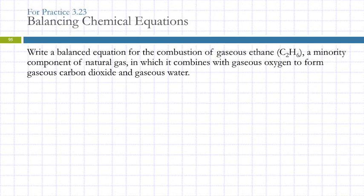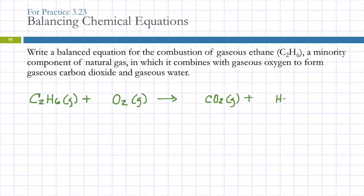Balanced chemical equation for combustion of gaseous ethane, a minority component of natural gas in which it combines with gaseous oxygen to form gaseous carbon dioxide and gaseous water. So they gave us the formula of ethane because we haven't officially learned how to write that formula yet, and that's in the gas state. What's the other reactant here? O2. Oxygen. Oxygen is a diatomic element. When it's by itself, you have to write it as O2. That's a gas, to form carbon dioxide, CO2. It says it's in a gas state. And water in the gas state, H2O.